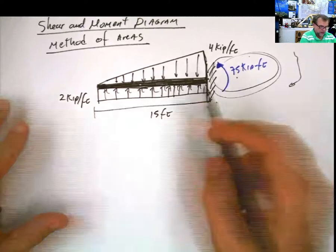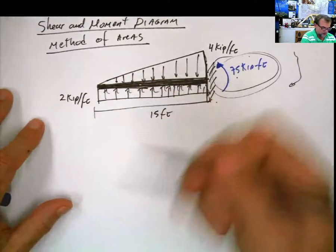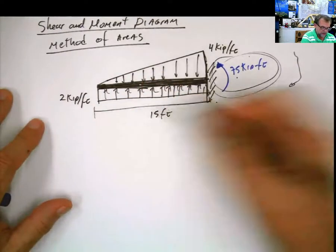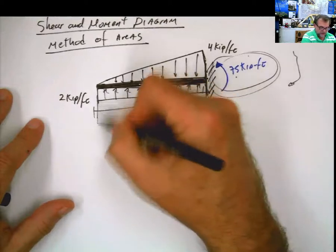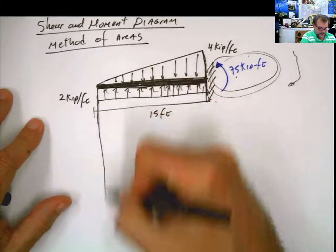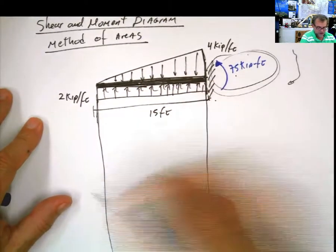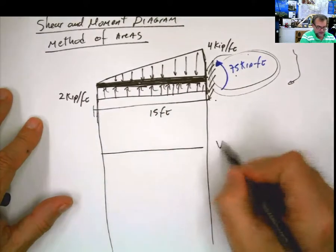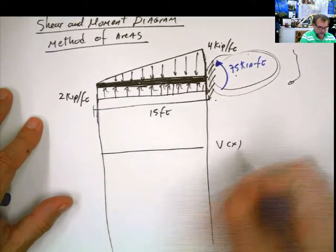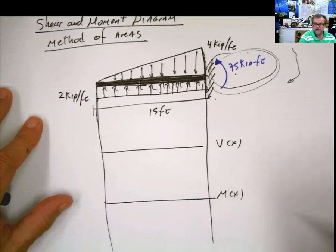Now we have these, and we tried sections and integrals. Now we're going to do the same problem by areas. After defining the discontinuity zones — which in this case is only one — and knowing this is the shear and this is the moment, now comes the method of the areas.